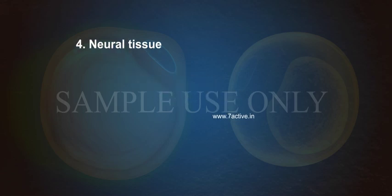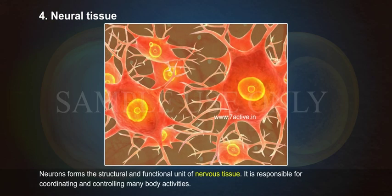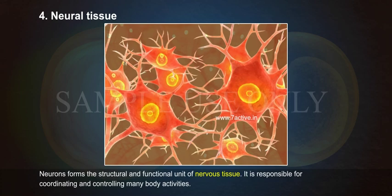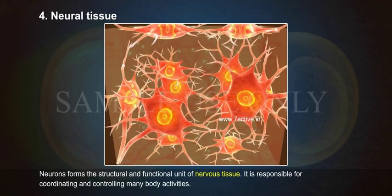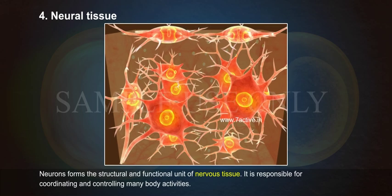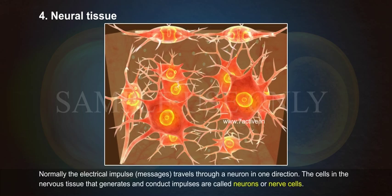Neural tissue: The neuron forms the structural and functional unit of the nervous system. It is responsible for coordinating and controlling many body activities. Normally, electrical impulse messages travel through a neuron in one direction. The cells in the nervous tissue that generate and conduct impulses are called neurons or nerve cells.